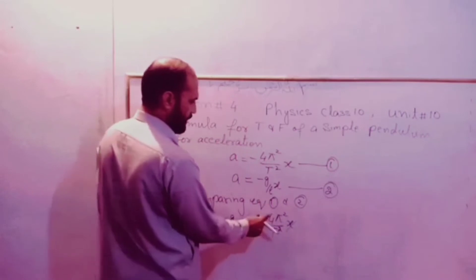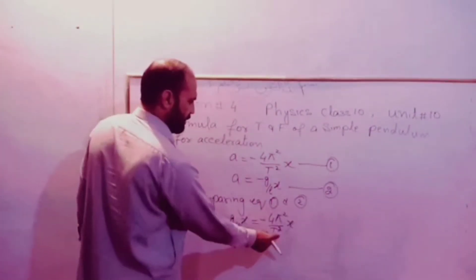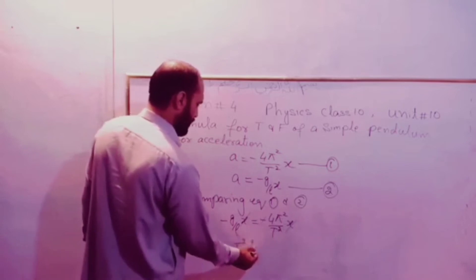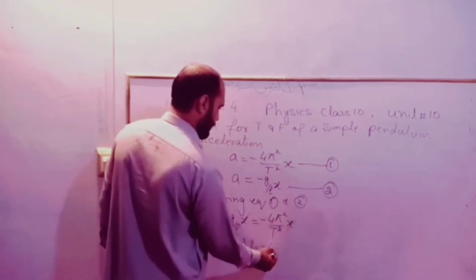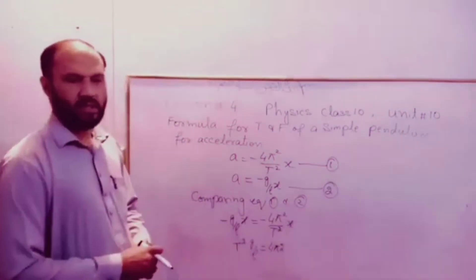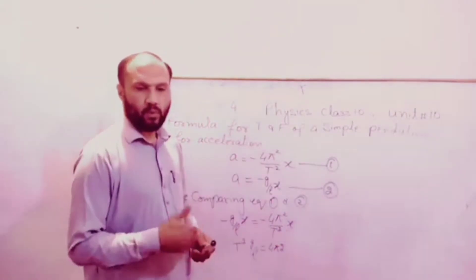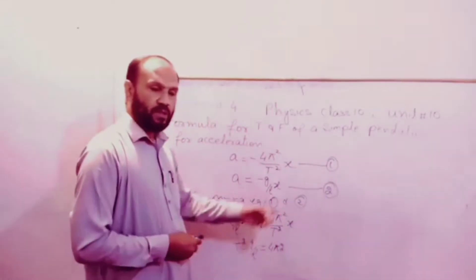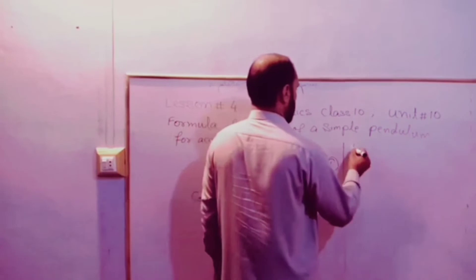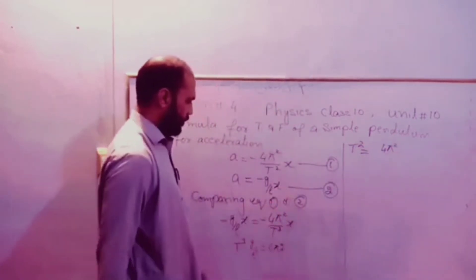Setting the equations equal: omega squared equals 4 pi squared over T squared, and also omega squared equals g over L for a pendulum. So g over L equals 4 pi squared over T squared. Rearranging: T squared equals 4 pi squared times L over g. Two sides of the equation balance.